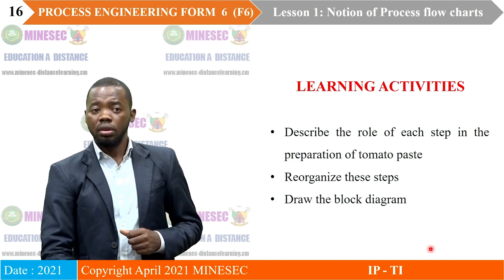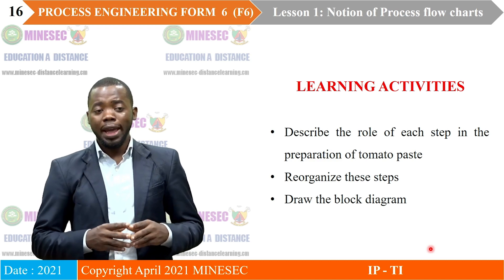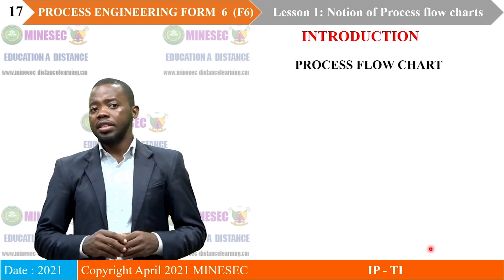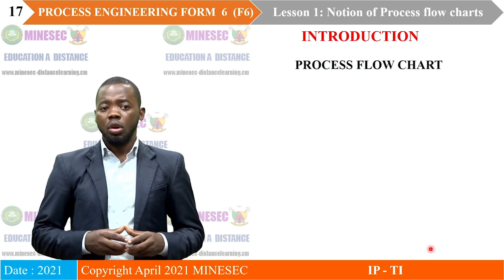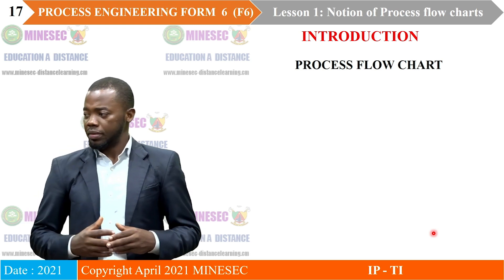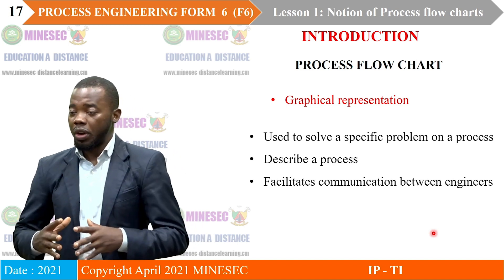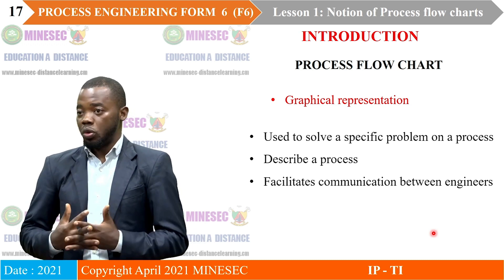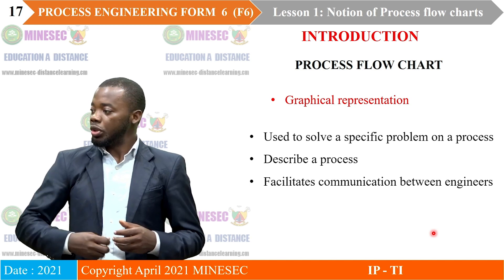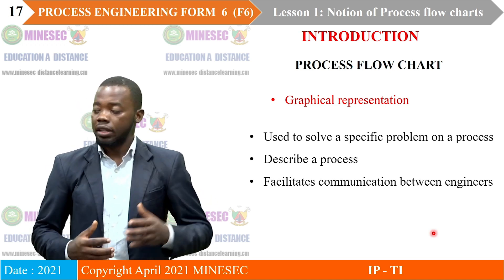You are asked to describe the role of each step in the preparation of tomato paste, and to draw a block diagram for its preparation. Process flowcharts are representations of processes used in the chemical industry to communicate among engineers. They are graphical representations used to solve specific problems. When establishing a process, the first thing to do is draw a flowchart, because in an engineering environment, it is with a flowchart that engineers communicate with each other, locally or across different locations.